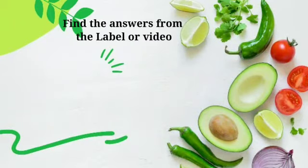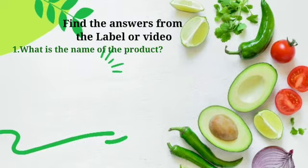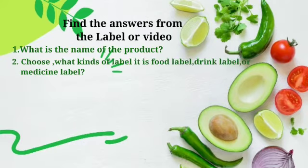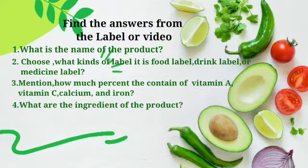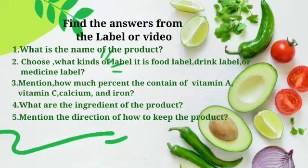Find from the label: what is the name of the product? Choose what kind of label it is — food label, drink label, or medicine label. Mention how much percent the contents of vitamin A, vitamin C, calcium and iron are. What are the ingredients of the product?